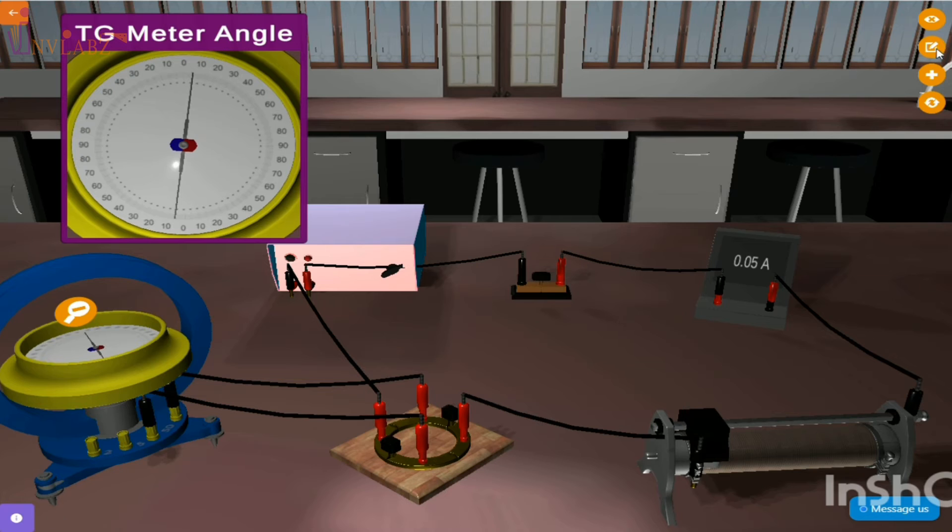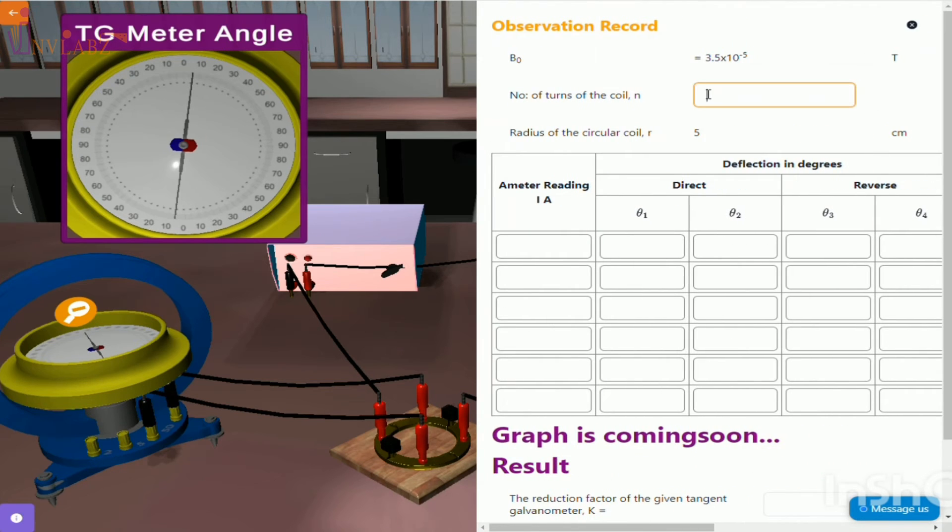Set the voltage such that the deflection in the tangent galvanometer is between 30 and 60 degrees. Note the two angles in the record table.